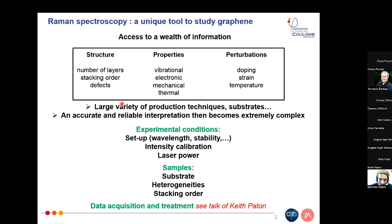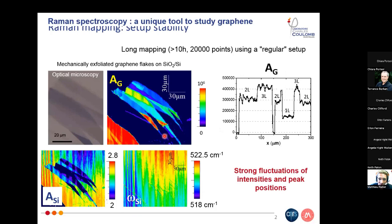Thank you. Hello to everyone. I am Mathieu Palais from CNRS and the University of Montpellier in France. As has been said several times, Raman is a very powerful tool to access a wealth of information about graphene — its structure, its properties — and you can also follow the effect of perturbations such as doping, strain, etc. Given the large variety of production techniques and substrates, it can be very complex to get an accurate and reliable interpretation from Raman. In this talk, I will review where the complexity comes from, divided into three categories: experimental conditions, samples, and data acquisition and treatment.